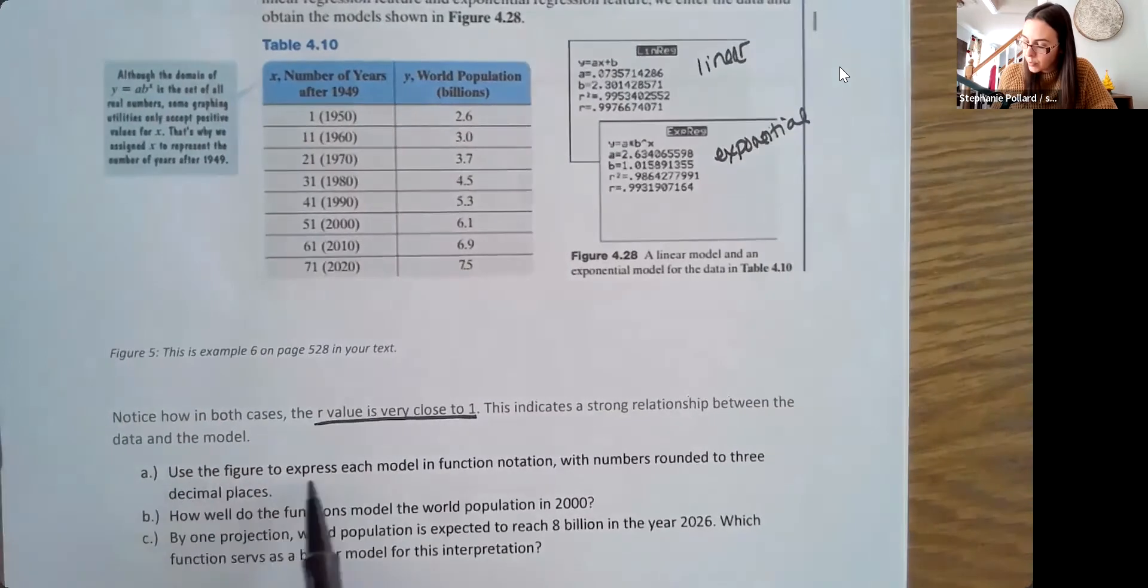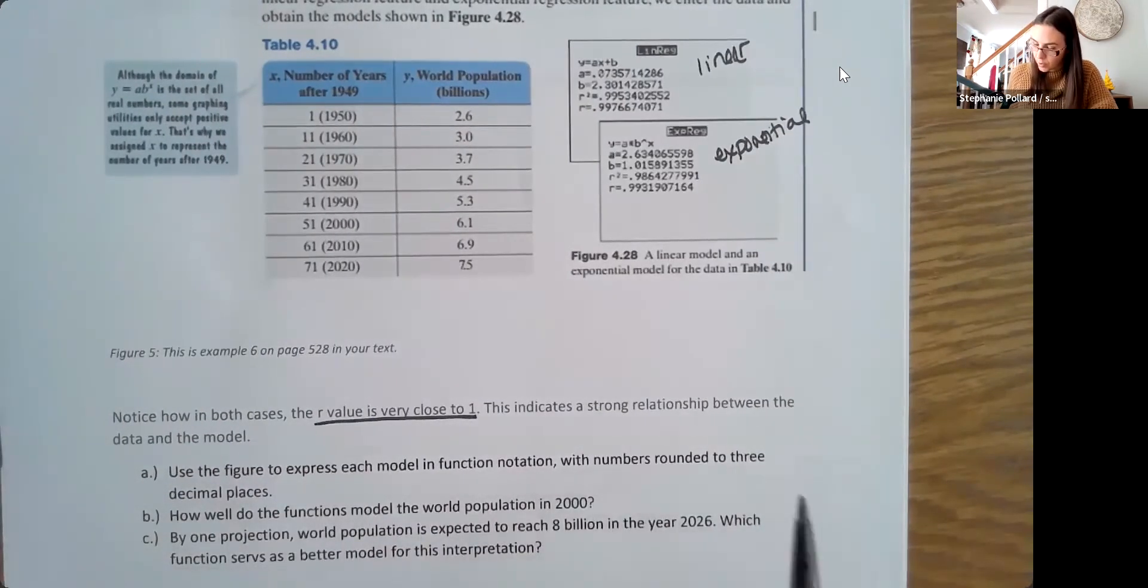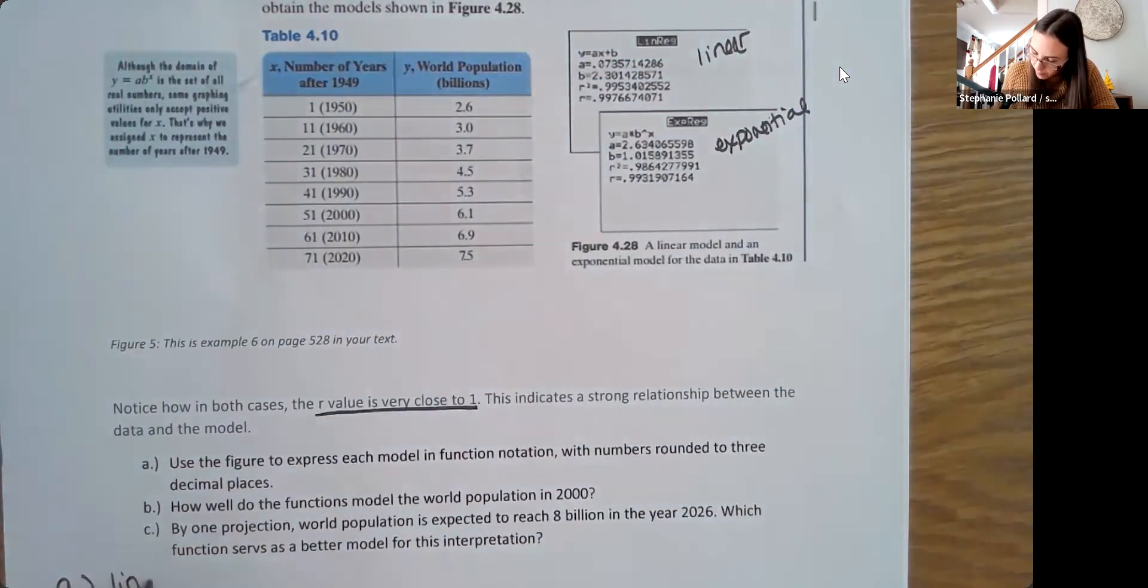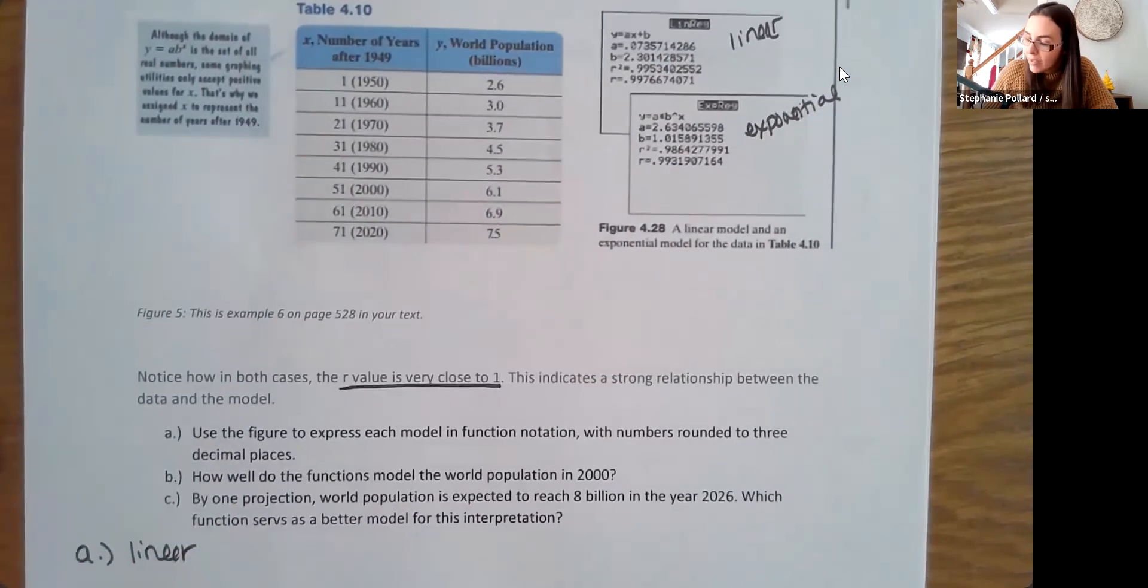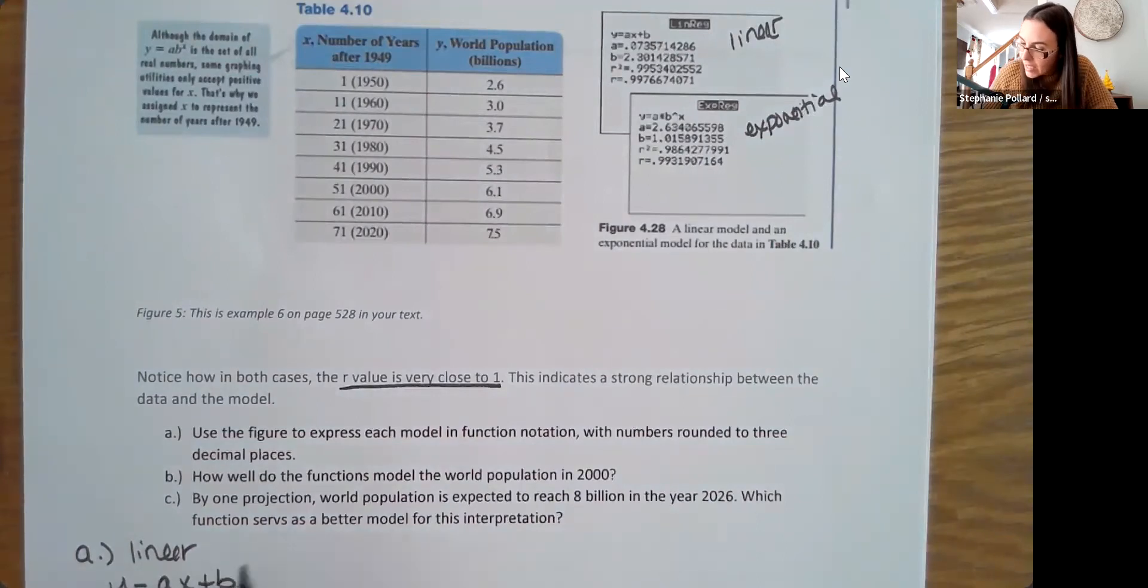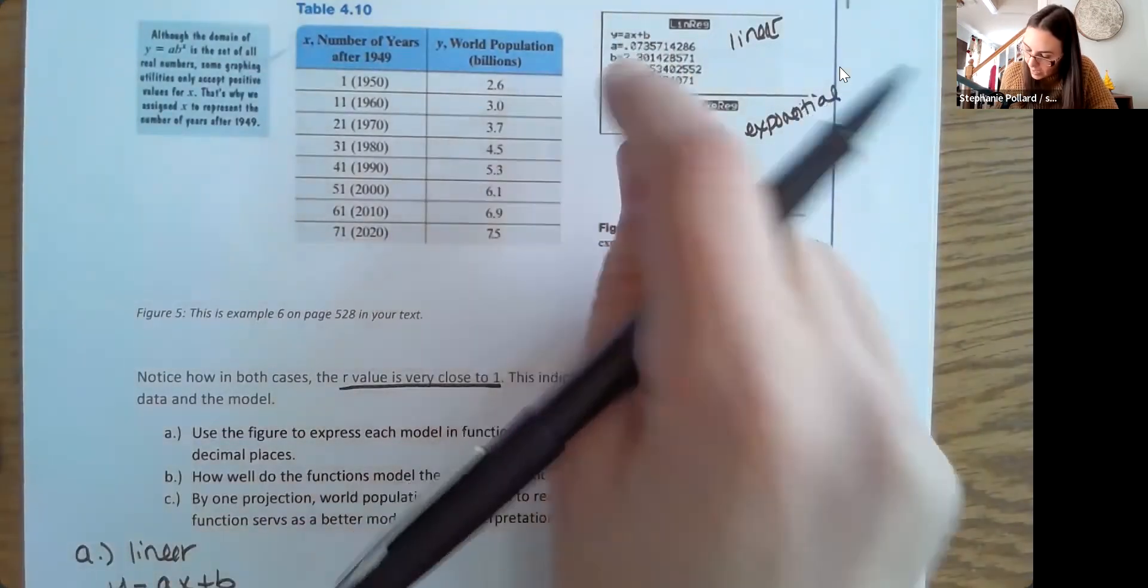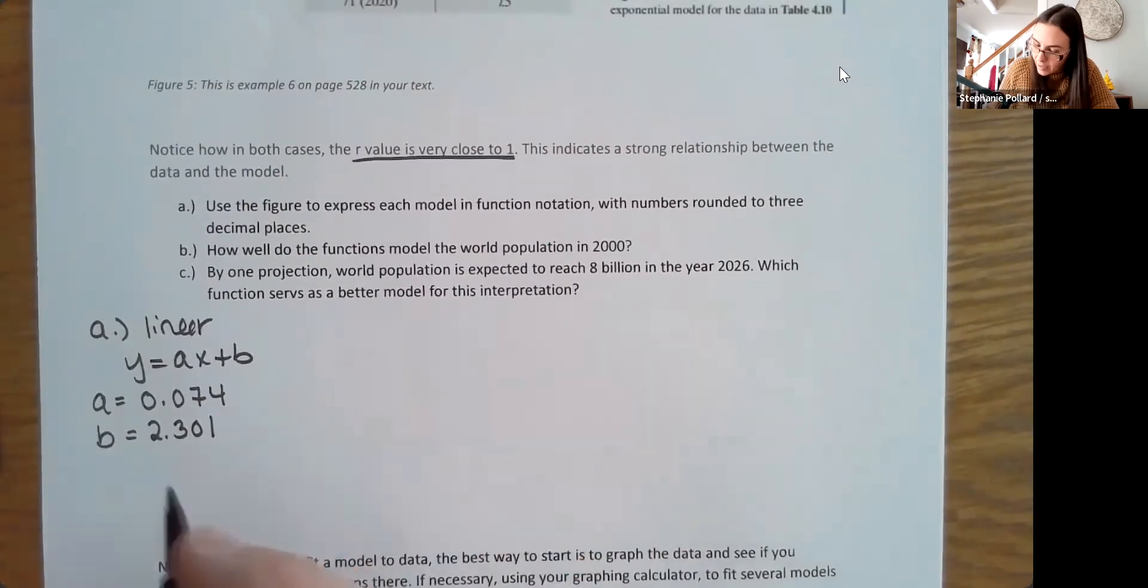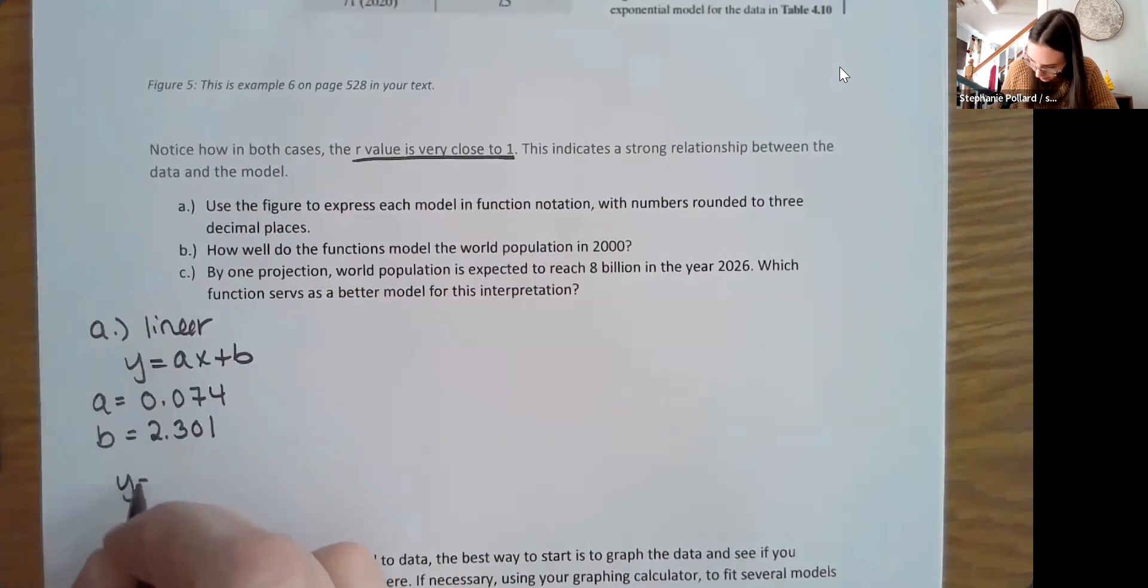So let's use the figure to express each model in function notation, and we can write our numbers to three decimal places. So when you have that output here, let's do the linear one first. It gives you the general form up top. So it's telling you to use Y equals AX plus B, and then it's giving you the A and the B value. So your A value here, rounding to three decimal places, is 0.074. And then our B value, 2.301. So we're going to plug this in. A gets plugged in here, and then our B value.